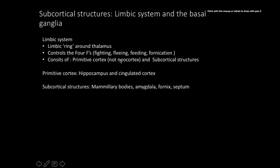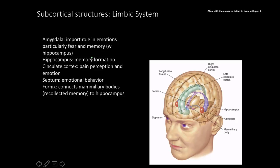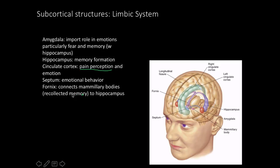The limbic system consists of the primitive cortex — hippocampus and cingulate cortex — and subcortical structures: mammillary bodies, amygdala, fornix, and septum. The amygdala is important in emotional responses, particularly fear, and works with the hippocampus to encode frightening memories so you avoid those situations in the future — an evolutionary advantage. The cingulate cortex plays a role in pain perception and emotion. The septum is involved in emotional behavior. The fornix connects the mammillary bodies to the hippocampus for recollective memory.